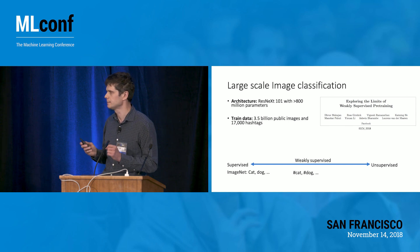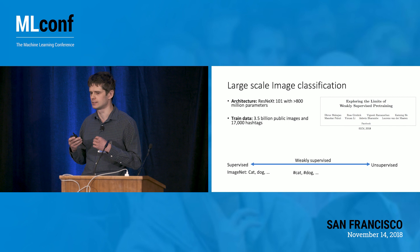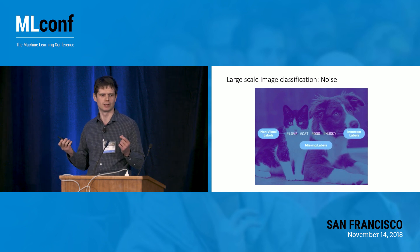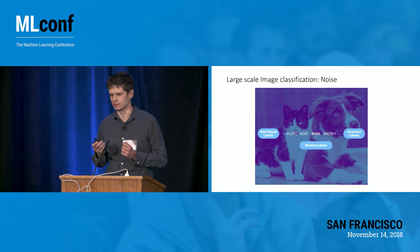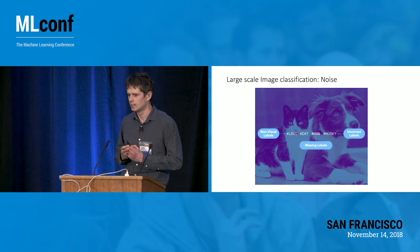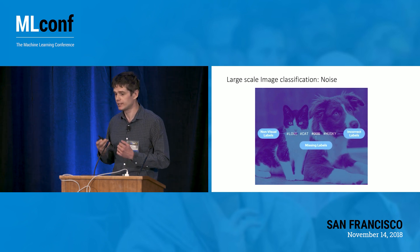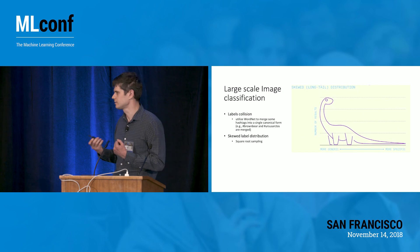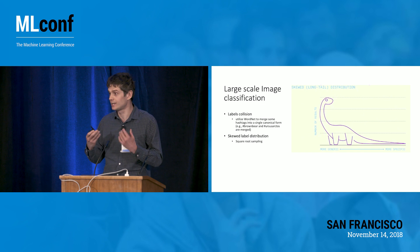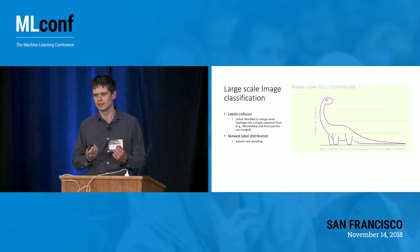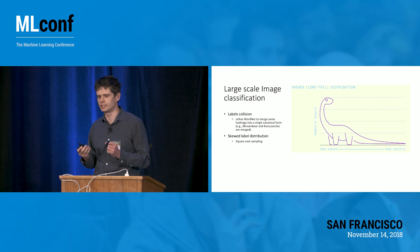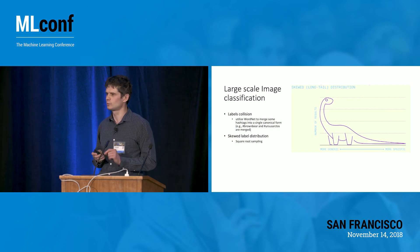We published a paper this year at ECCV about training a state-of-the-art image recognition system using this noisy data. When we talk about noise, there are several problems: non-visual labels like 'love' with no geometrically coherent representation, incorrect labels like 'husky' assigned to a dog that isn't one, and missing labels where a dog attribute was not assigned by the user. Additionally, the data has a long-tailed distribution — a label like 'cat' is extremely popular on Instagram while others are not — and there's also a label collision problem where different words refer to the same thing, which can confuse the classifier.